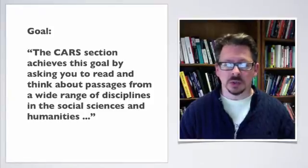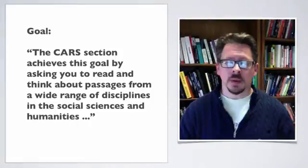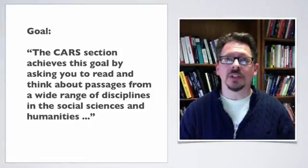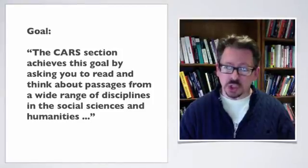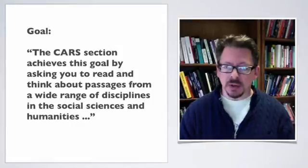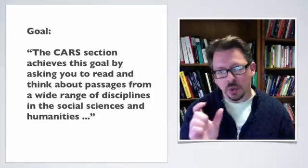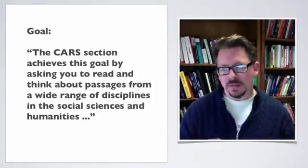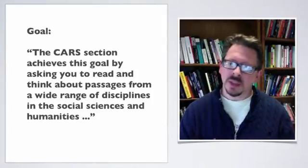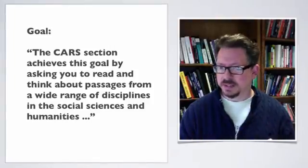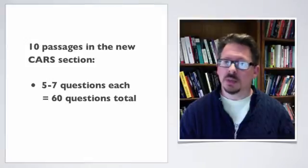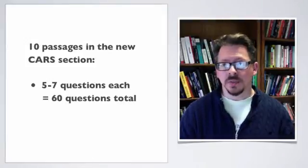The CARS section achieves this goal by asking you to read and think about passages from a wide range of disciplines in the social sciences and humanities — philosophy, psychology, sociology, anthropology, history, literature, religious studies — the sort of thing you might encounter in a college course on those subjects. The passages are relatively short but typically 500–600 words, so they're really mini essays. There'll be ten passages, each with five to seven questions, for a total of 60 questions for the whole section.